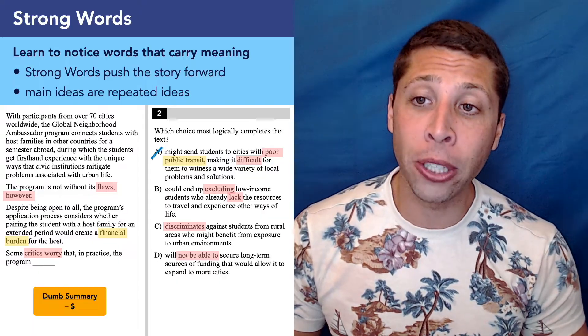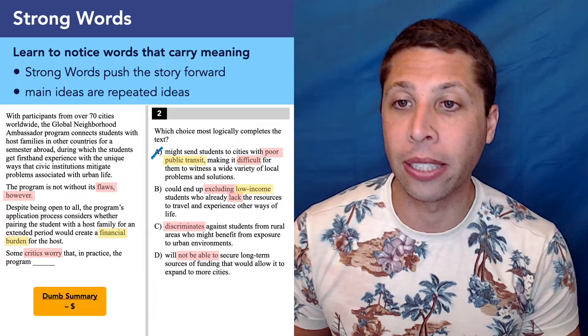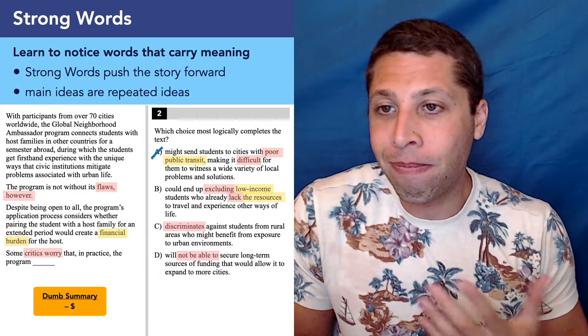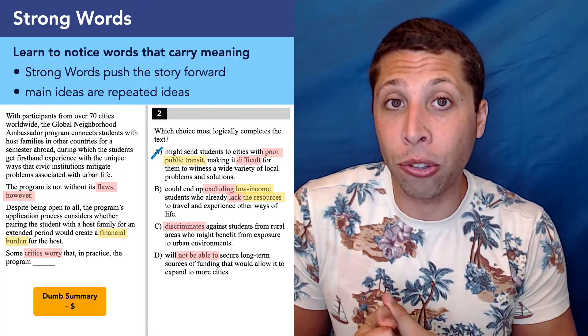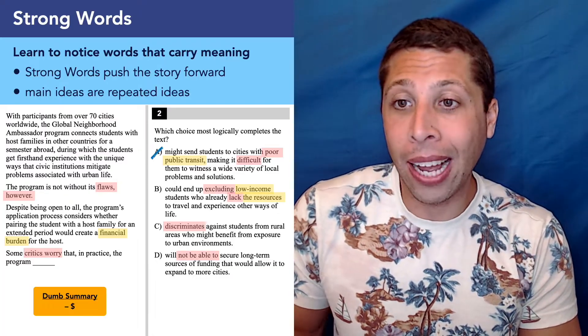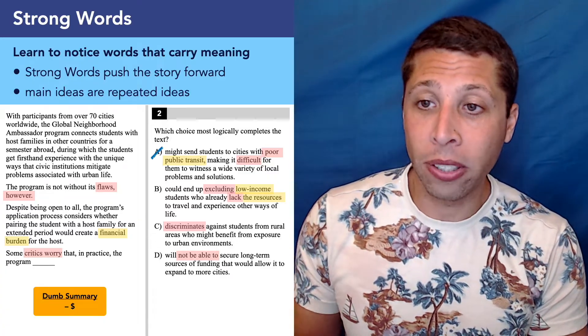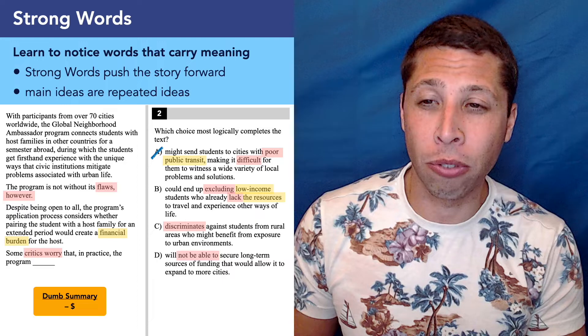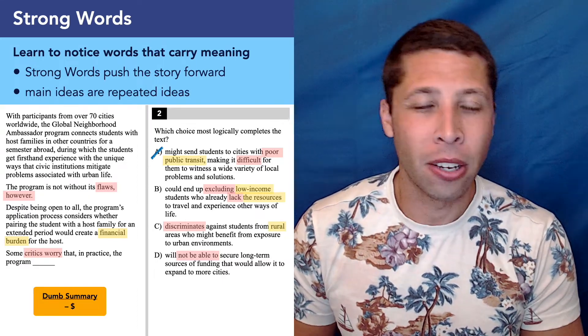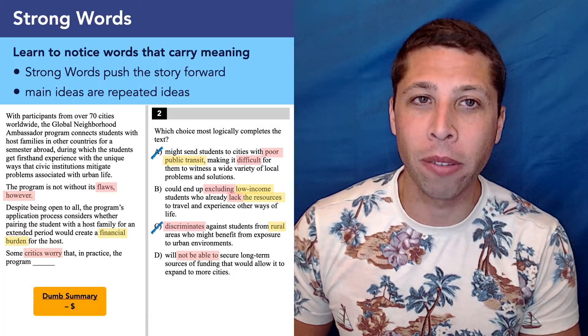Choice B, the program could end up excluding low income students who already lack the resources to travel and experience other ways of life. So we definitely have the money piece here. There's not really anything else that jumps out to me. So the strong words seem to all be provable. I don't know. Maybe that's enough. But I should look at C and D and compare. So choice C, the program discriminates against students from rural areas who might benefit from exposure to urban environments. No, there's nothing about rural areas here. It's all about cities. So just that's a strong word. No proof.